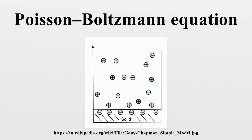Origins, background, and derivation. The Poisson-Boltzmann equation describes a model proposed independently by Louis George Gouy and David Leonard Chapman in 1910 and 1913, respectively. In the Gouy-Chapman model, a charged solid comes into contact with an ionic solution, creating a layer of surface charges and counter-ions, or a double layer. Due to thermal motion of ions, the layer of counter-ions is a diffuse layer and is more extended than a single molecular layer.